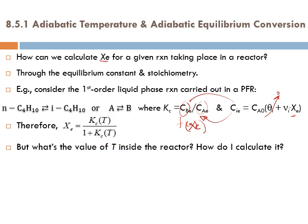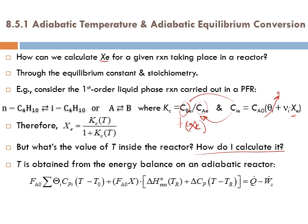We have Xe as a function of Kc, and Kc is a function of temperature. But what is the temperature inside the reactor? I need to know the temperature in order to calculate Kc and then use it to calculate Xe. The temperature T is obtained from the energy balance on an adiabatic reactor — this is an algebraic equation.